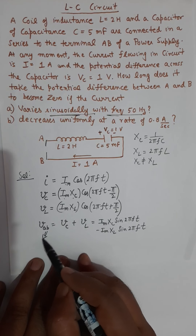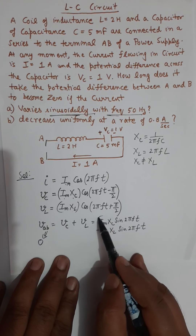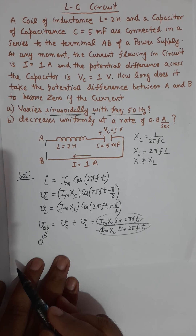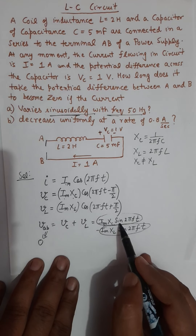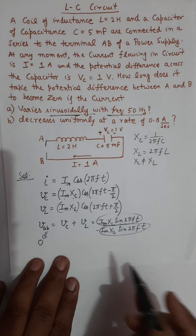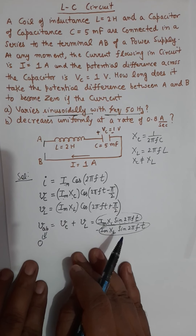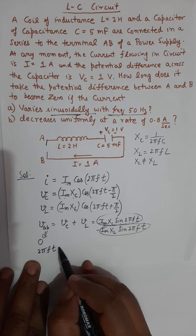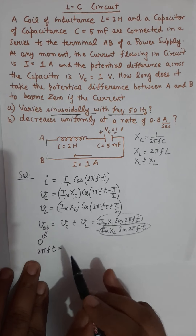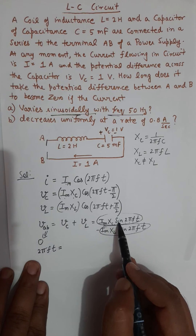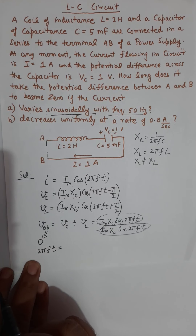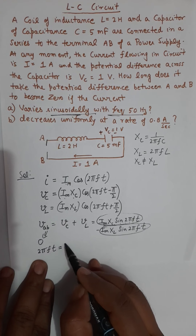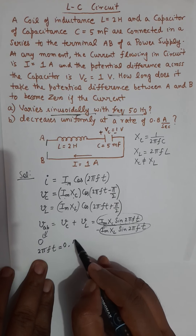So V_AB can be 0 only if both terms are 0, and that means the value of sin(2πft) has to be 0. If the value of sin(2πft) has to be 0, then 2πft has to be some integral multiple of π. We want sin(2πft) to be 0, which happens when 2πft is either 0 degrees or 180 degrees, that is π.